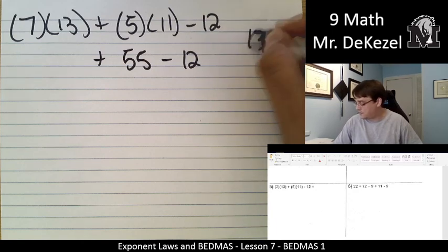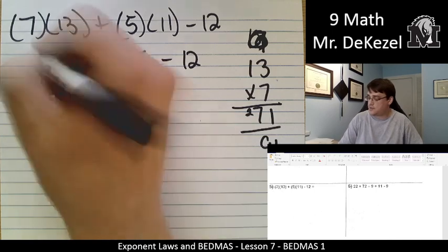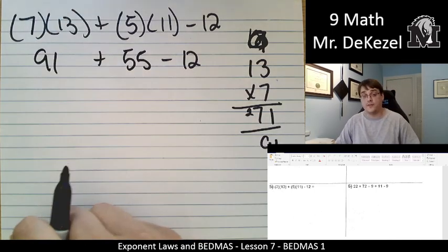7 times 3 is 21, a 2 for adding. 7 times 1 is 7, plus 2 is 9. It's 91. So this is 91 plus 55 minus 12.